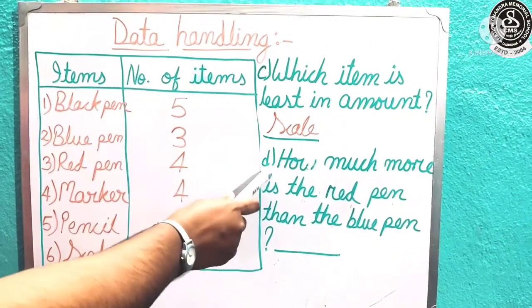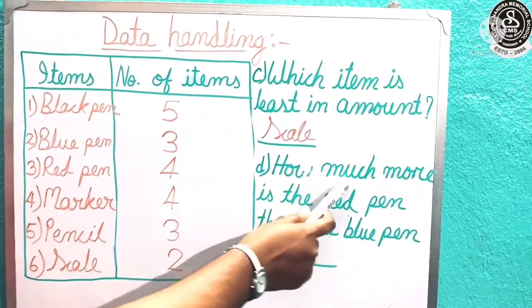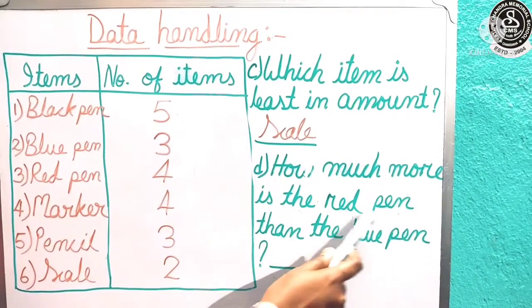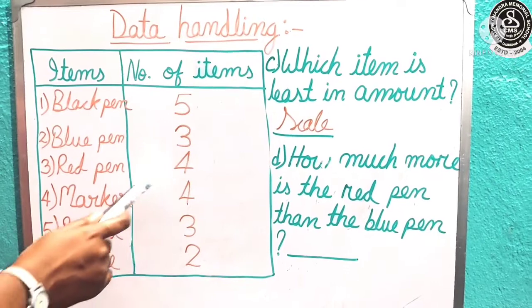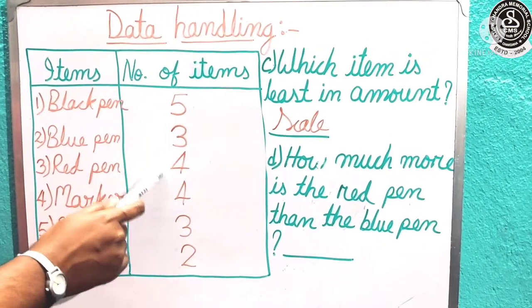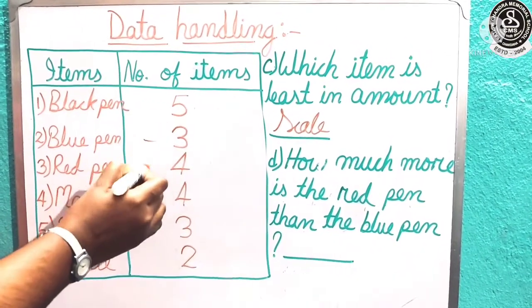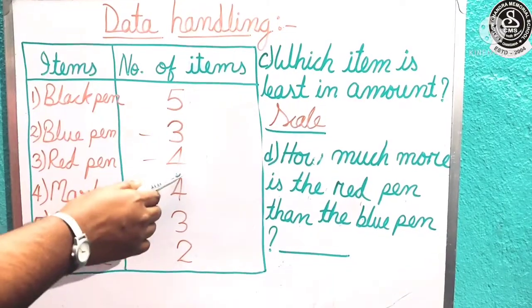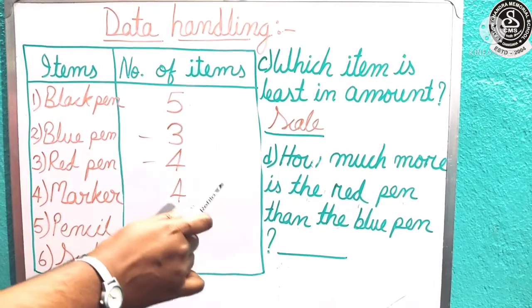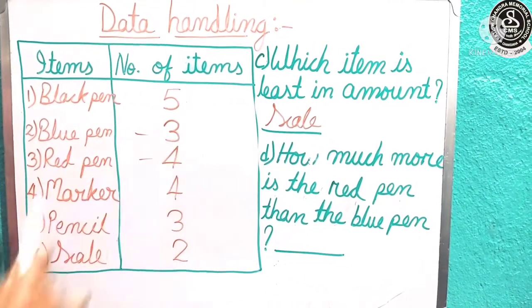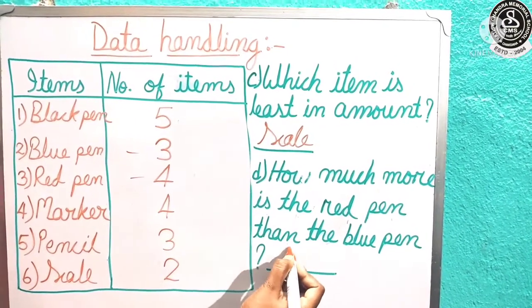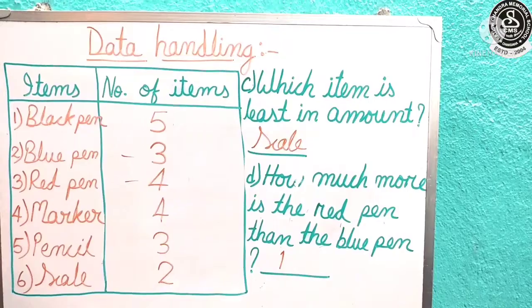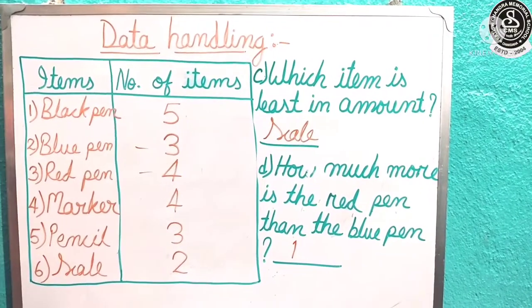Now question number D is given. How much more is the red pen than the blue pen? Where is red pen children? Here, 4 in number. And blue pen? It is 3 in number. How much more? If we subtract, we will get 4 minus 3. Yes, only 1 more. We will write here 1.